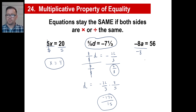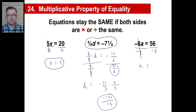If I divide by negative 8 on the left side, I divide by negative 8 on the right side. Negative 8 divided by negative 8 is 1 — that's what I want: a. What is positive 56 divided by negative 8? A positive divided by a negative is a negative. And 56 divided by 8 is just 7. So there is my answer: a equals negative 7.